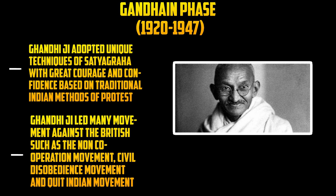The Gandhian phase was the last and final phase in the Indian national movement where Gandhiji contributed in order to attain freedom for our country India. Gandhiji adopted the unique techniques of Satyagraha — Satyagraha is nothing but holding the stick of truth. He gave great courage and confidence based on the traditional Indian methods of protest, like doing Hartals and adopting non-violence methods. Mahatma Gandhi adopted the techniques of Satyagraha which gave great courage to the Indian society.